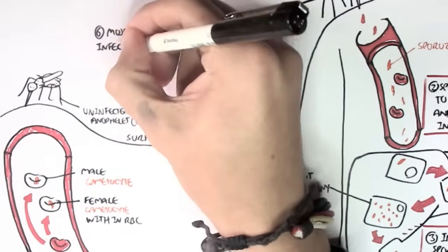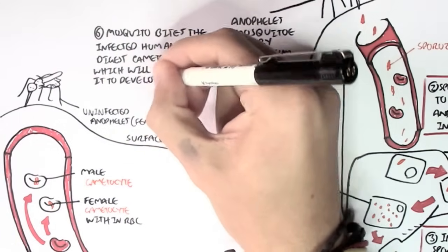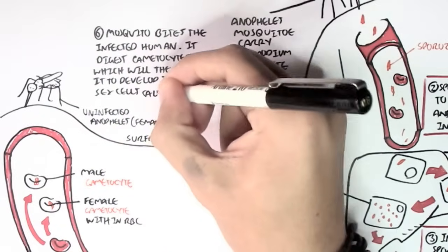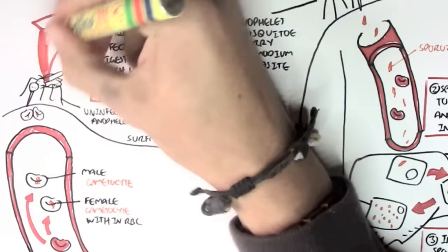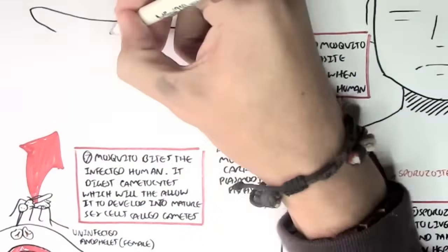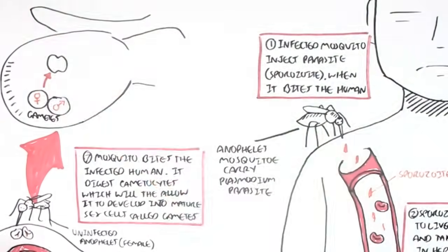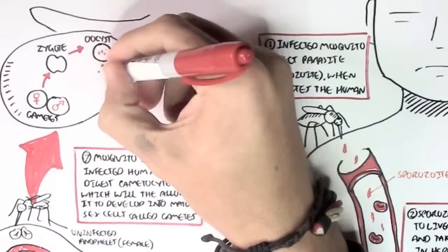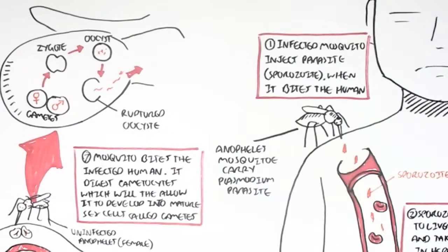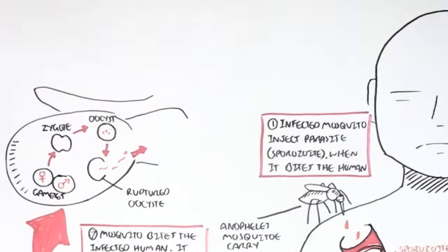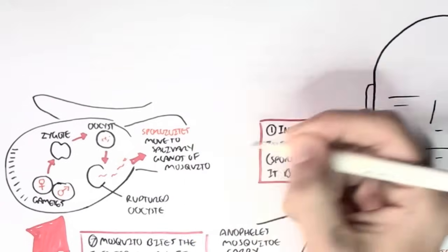So, writing this up, the mosquito will bite this infected human, it will digest the male and female gametocytes, which will allow the gametocytes to develop into mature sex cells called gametes. So, here this Anopheles mosquito will suck up this male and female gametocyte. And then, let's just zoom into this back of this Anopheles mosquito to see what happens with these gametocytes, now gametes. The gametes will fuse together to form a zygote, which will form an oocyte where we have sporozoites begin to develop. So, these sporozoites will multiply and then will cause the oocyte to rupture, releasing the sporozoites. The sporozoites will move into the salivary glands of the mosquito, ready to be injected into another human being or anything else.